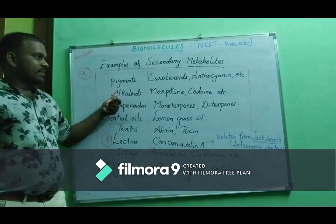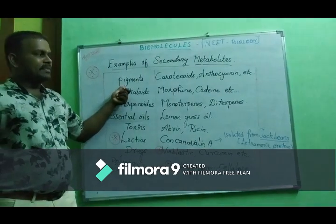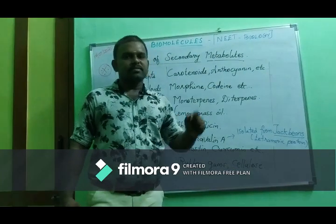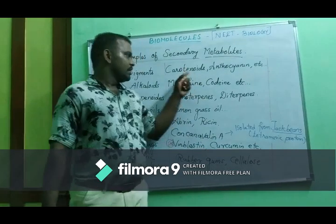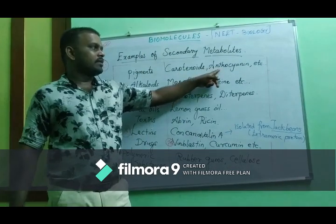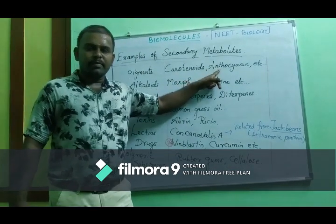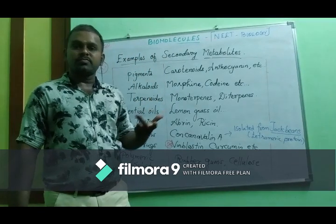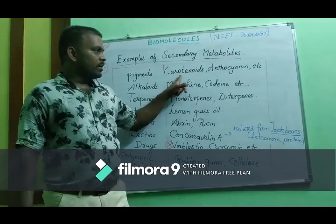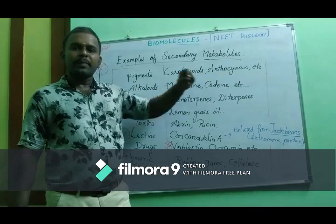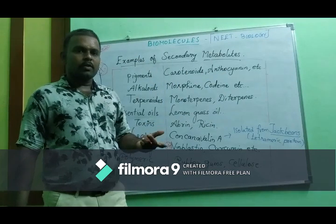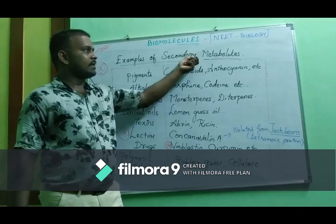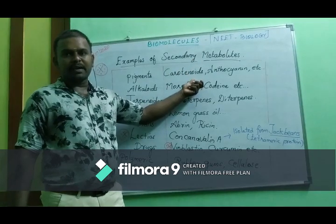One category of secondary metabolites is pigments. Examples include carotenoids and anthocyanins — these give colored vegetables and fruits their orange, red, and purple colors. These pigments are classified as secondary metabolites.